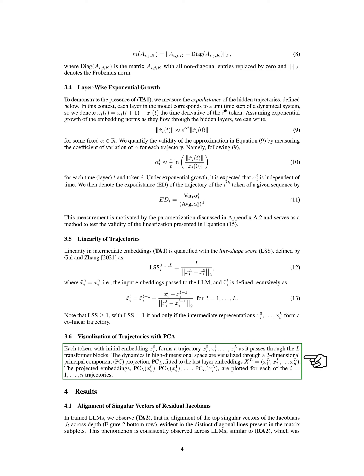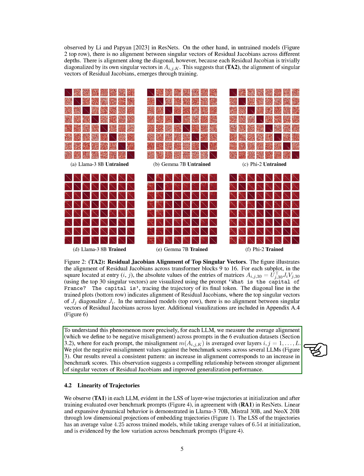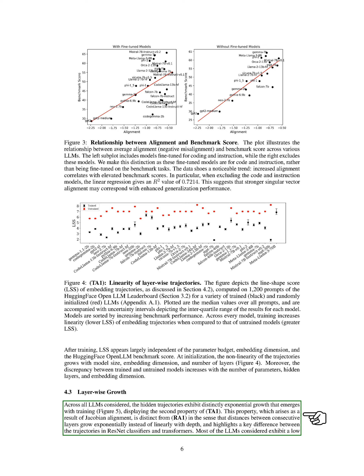We observe that in trained models, the top singular vectors of the Jacobians align across different depths, indicating a pattern that emerges during training. This alignment is linked to better generalization performance. Additionally, we notice that the trajectories show linear behavior after training, with distances between consecutive layers growing exponentially instead of linearly. This exponential growth is a unique property of transformers compared to ResNets.